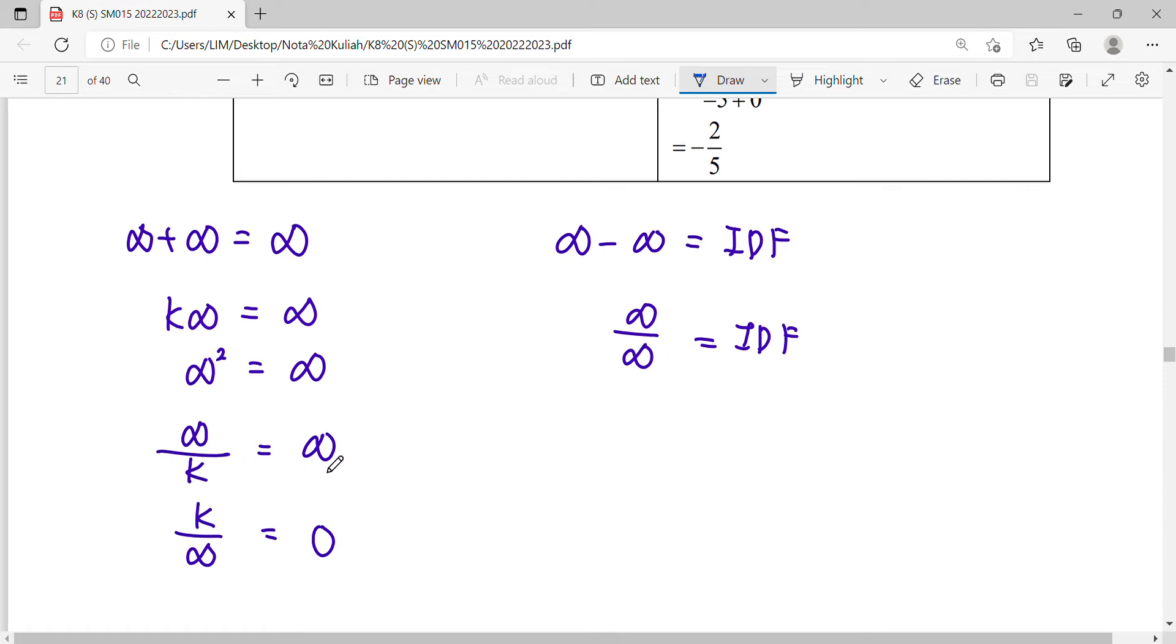A number divided by infinity gives zero. When you multiply or add many things together, you still get infinity. For example, many things divided by a number still gives you a value in infinity.